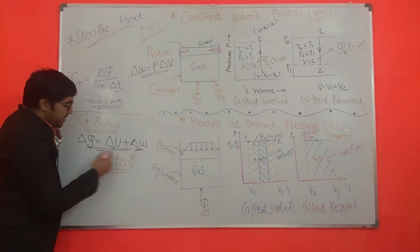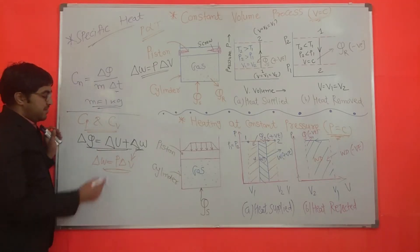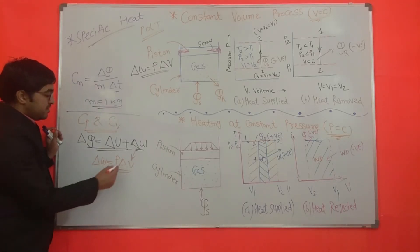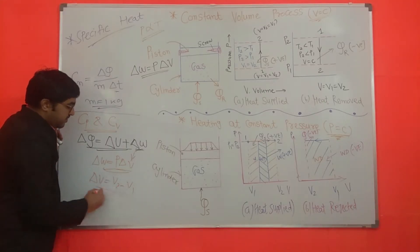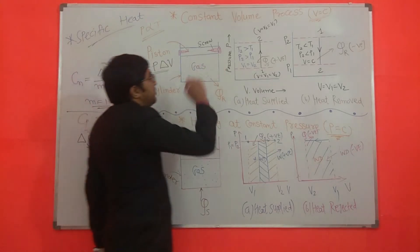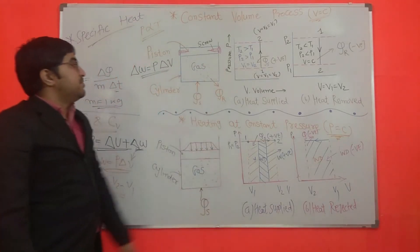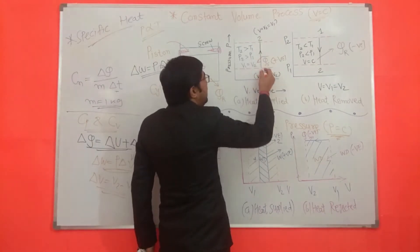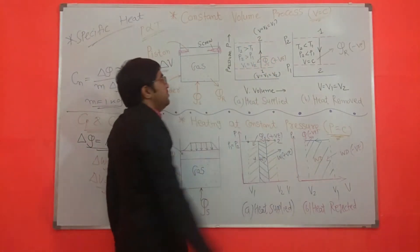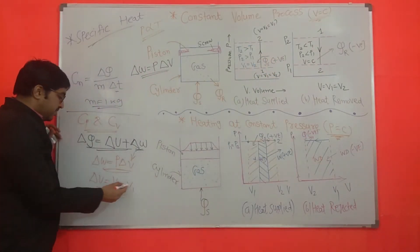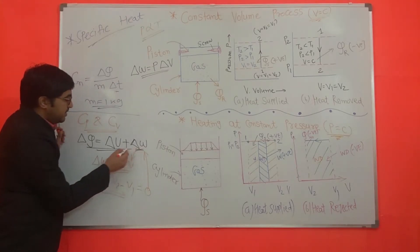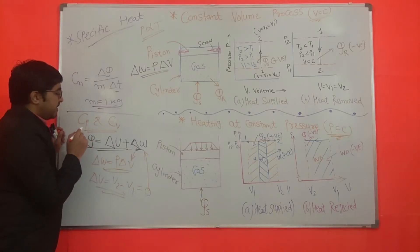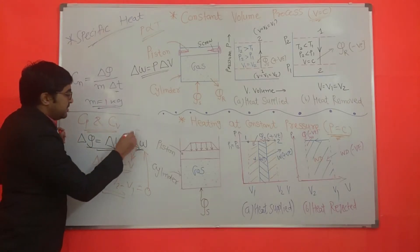We know that delta W equals P delta V, where delta V equals V2 minus V1. But in the constant volume process, volume remains constant at every point in process 1 to 2, so V1 equals V2, meaning delta V equals zero. Therefore, work done during the constant volume process is zero, and there is no output produced.